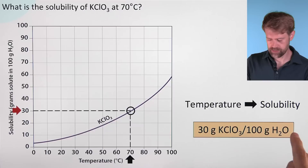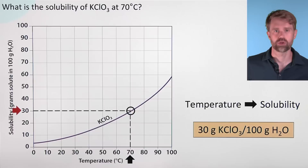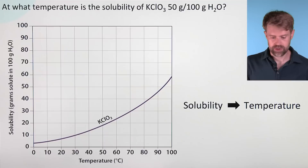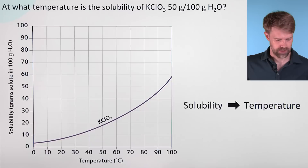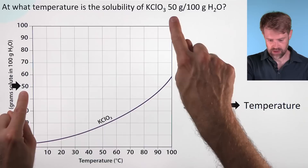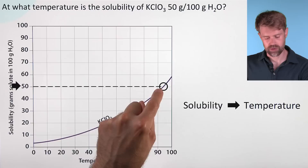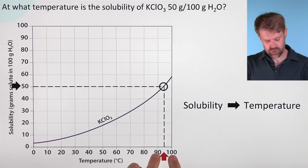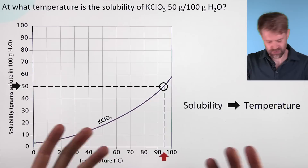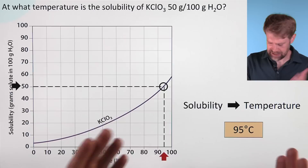Remember that solubility is per a certain amount of solvent — it's usually 100 grams of water when you're looking at curves like this. We can also go the other way: at what temperature is the solubility of KClO3 50 grams per 100 grams of water? We have a known solubility and want to find the temperature. We go to the y-axis, find 50 grams per 100 grams of water, go across until we intersect with the solubility curve, and then go straight down to the x-axis. This isn't right on a number, so it requires estimation — let's say 95 degrees. That's the temperature where the solubility is 50 grams per 100 grams of water.